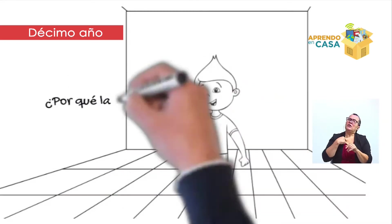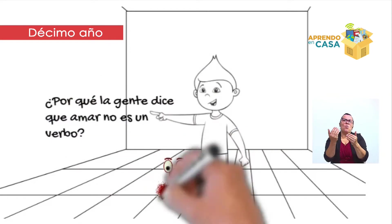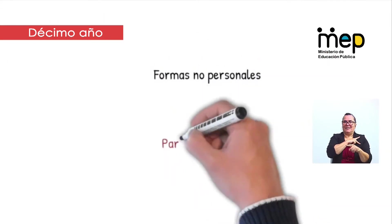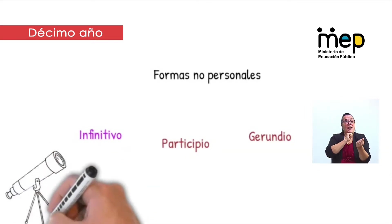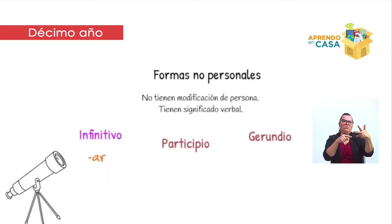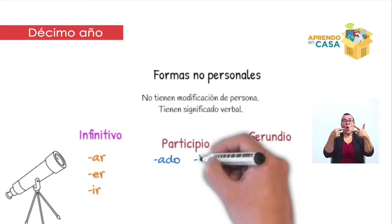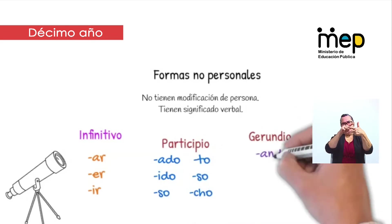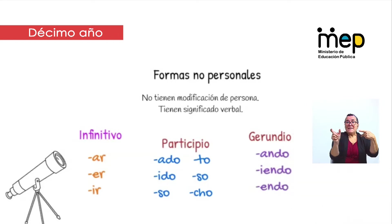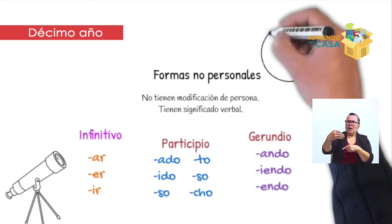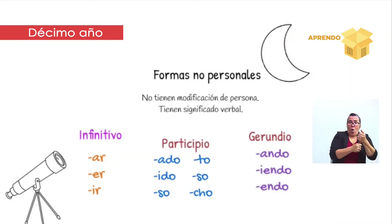Si les pregunto cuál es un verbo, muchos dirán que 'amar' es un verbo, pero no, no es verbo. Se llaman formas no personales, y se llaman así porque no tienen modificación de persona. Entre las formas no personales encontramos el infinitivo, el participio y el gerundio. El infinitivo son palabras que terminan en -ar, -er, -ir y le dan el nombre a los verbos. El participio termina en -ado, -ido, -oso, -cho, y los gerundios en -ando, -yendo, -endo. Estas formas no personales las usamos en forma cotidiana, ya sea como auxiliares del verbo, sustantivos o adjetivos.